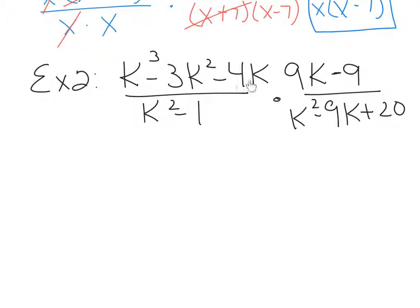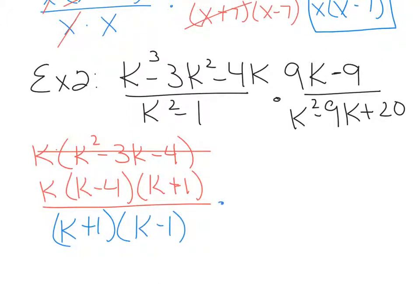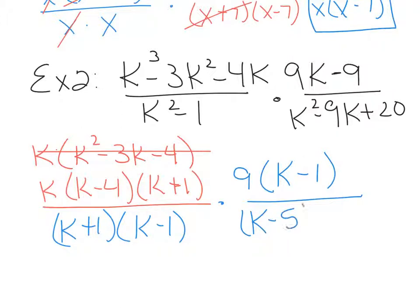The first thing I notice in this numerator is a GCF of k. When I pull that k out, I'm left with k squared minus 3k minus 4, which is a standard trinomial. Make sure you continue to factor — this trinomial factors further, giving k minus 4 times k plus 1. The denominator, k squared minus 1, is the difference of squares, so that becomes k plus 1 times k minus 1. Over here on the right, the numerator 9k minus 9 has a GCF of 9, so factoring out 9 leaves k minus 1. The denominator is a standard trinomial: k minus 5 times k minus 4.